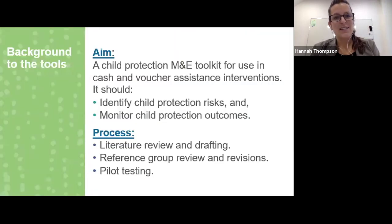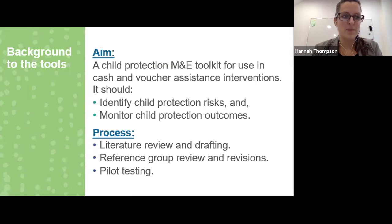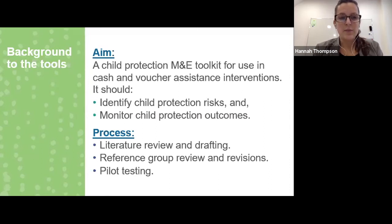The aim of the toolkit is to develop a set of tools for use in cash and voucher assistance interventions. Some tools are for child protection programs using CVA, and some are for all sector actors. They help identify child protection risks, ways to mitigate those risks, and monitor child protection outcomes — including programs not intentionally delivering child protection outcomes. The process started in October/November last year with a literature review, drafting of initial tools, reference group review and feedback, revision, and then pilot testing.